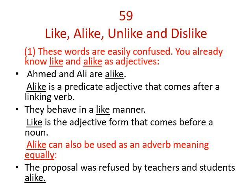We move now to Skill 59, which is about words that can sometimes be confused: 'like,' 'unlike,' 'alike,' and 'dislike.' These words are easily confused. You already know 'like' and 'alike' as adjectives. For example: 'Ahmed and Ali are alike' — this is a predicate adjective that comes after a linking verb. The linking verb does not have to be 'to be'; it can be 'seem,' 'taste,' 'feel,' 'prove,' or 'become.'